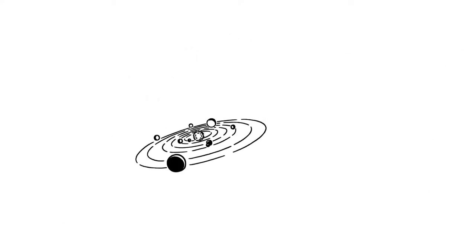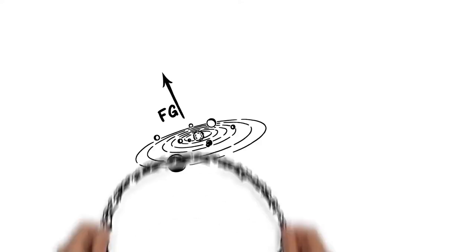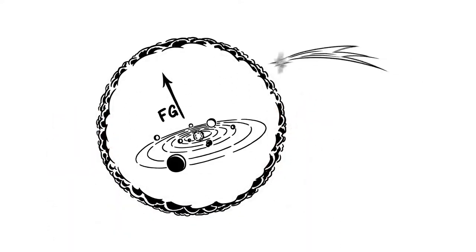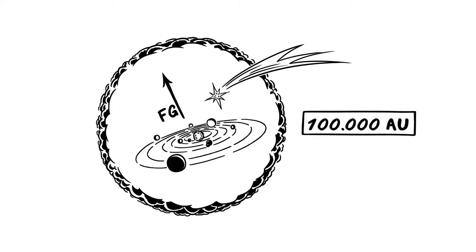But the solar system is much bigger. Its boundaries reach as far as the influence of the sun's gravity. It extends to a place called the Oort cloud, where most of the comets are believed to come from, up to 100,000 astronomical units away.